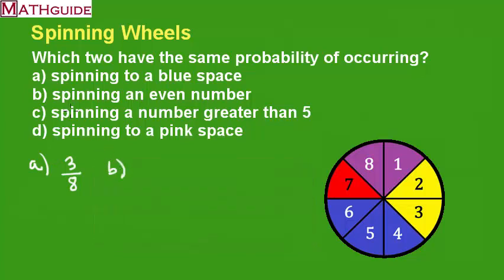Alright, B, spinning an even number. Well, it looks like there's two, four, six, eight. There are four favorable outcomes, four even numbers that is, out of eight total, which is one half. So there's about a 50% chance of spinning an even number.